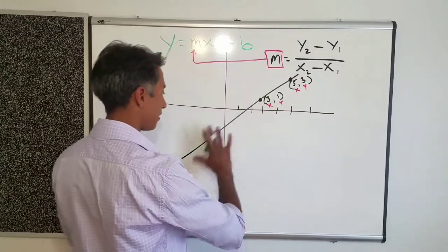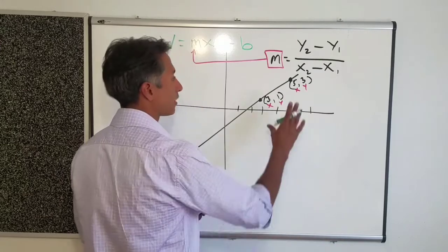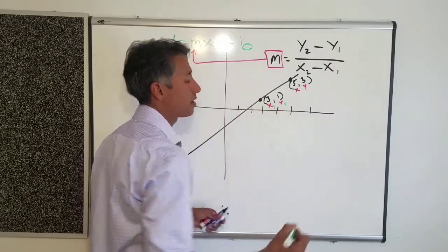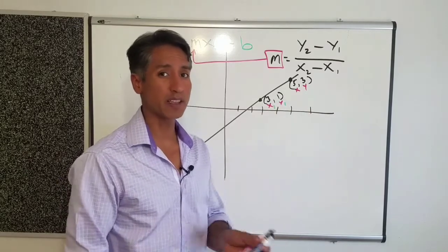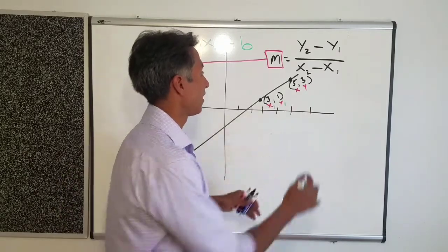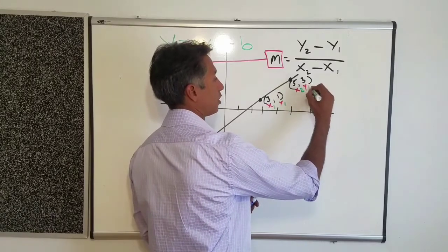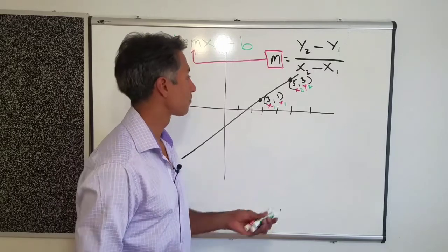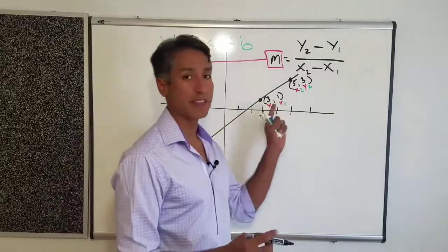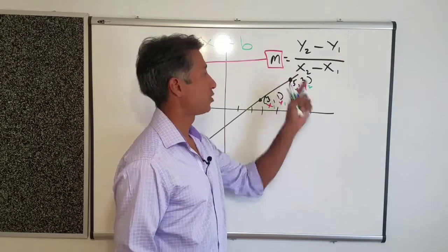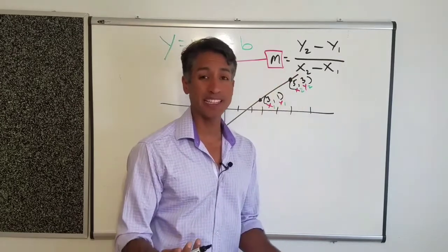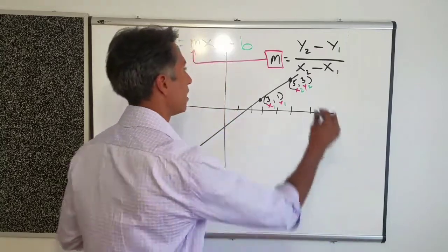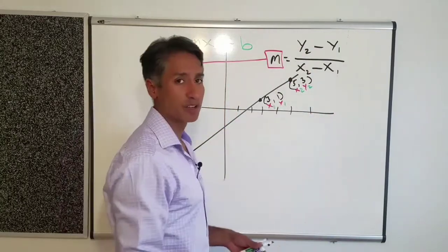Looking at this, we can label the first point. The nice part is it doesn't matter which way you do this. We'll say this is x-sub-1, y-sub-1 — our first ordered pair — and then this is x-sub-2, y-sub-2 for the second set. I always recommend you write out the formula the second you get a test or homework, because that's going to remind you what goes where.